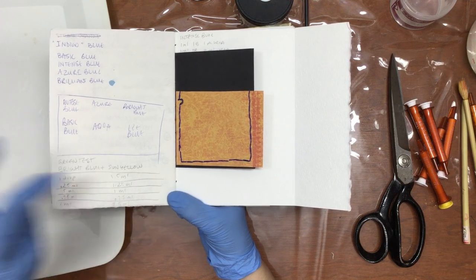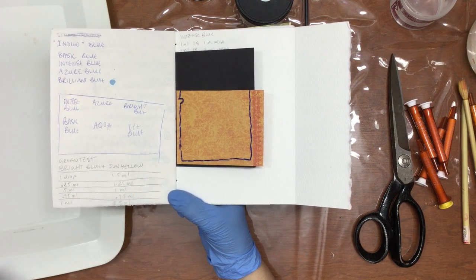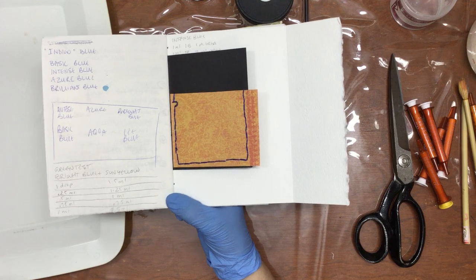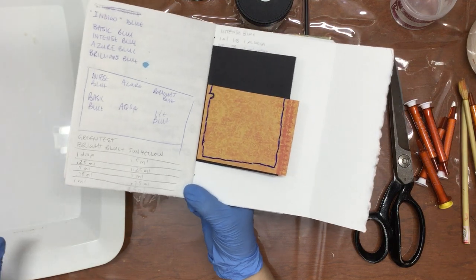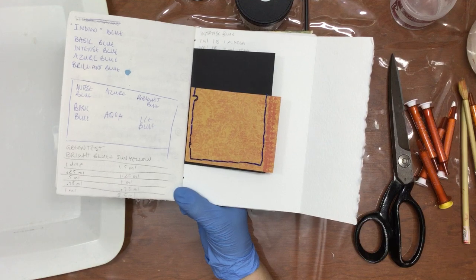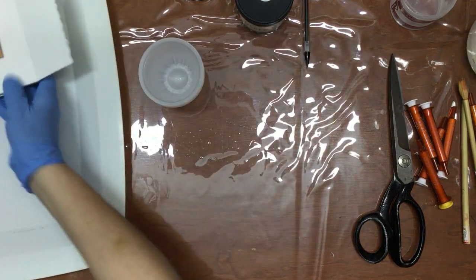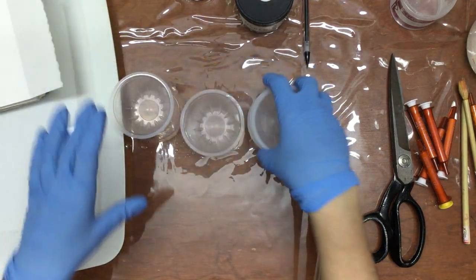The first one is going to be one drop of bright blue and 1.5 milliliters of sun yellow. I have discovered that 1.5 mils is pretty good to do the swatches of the size that I have, so I'm going to line up my cups.